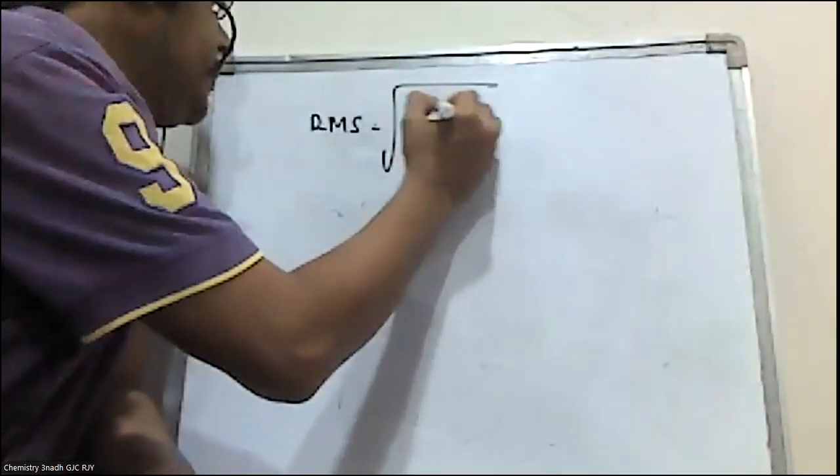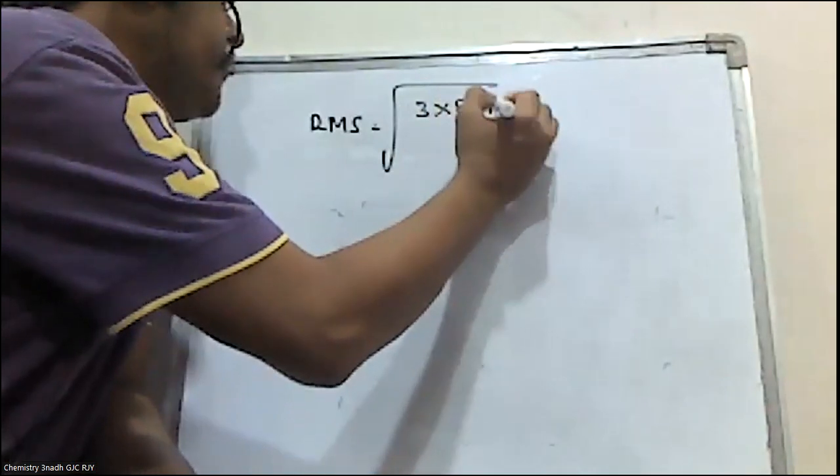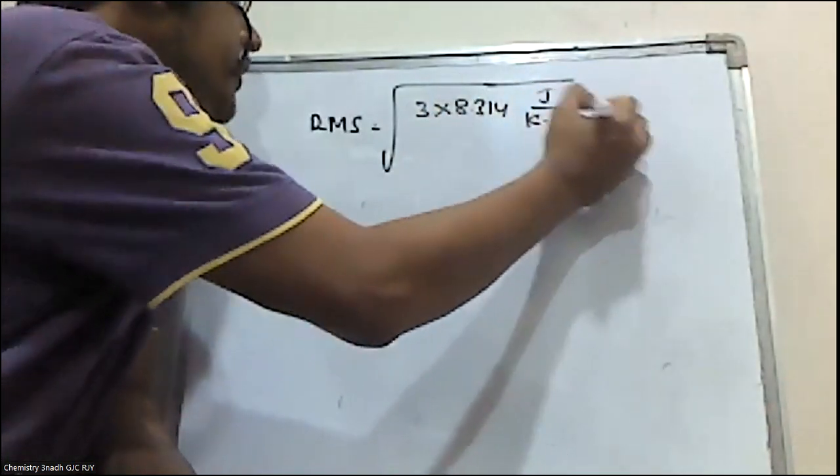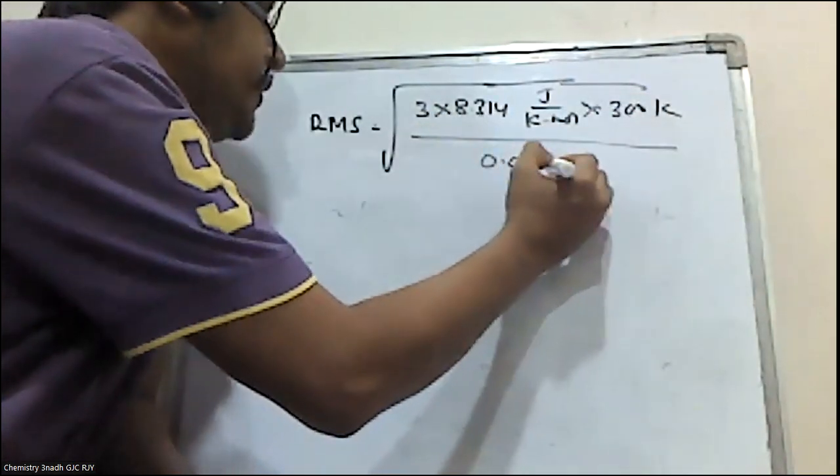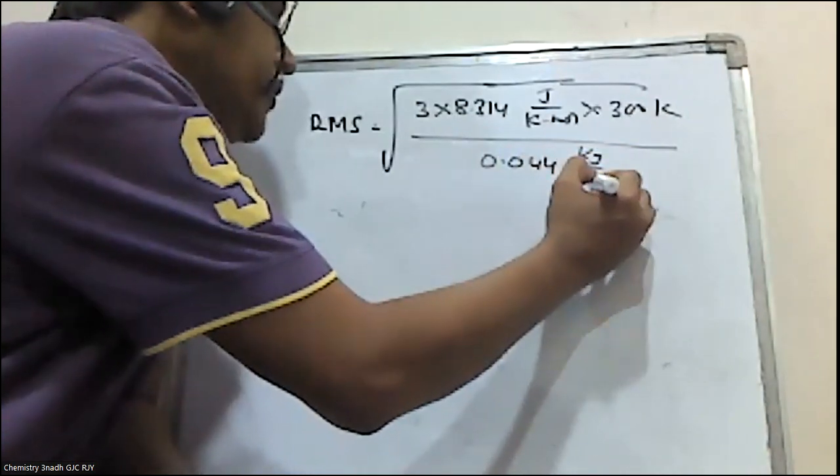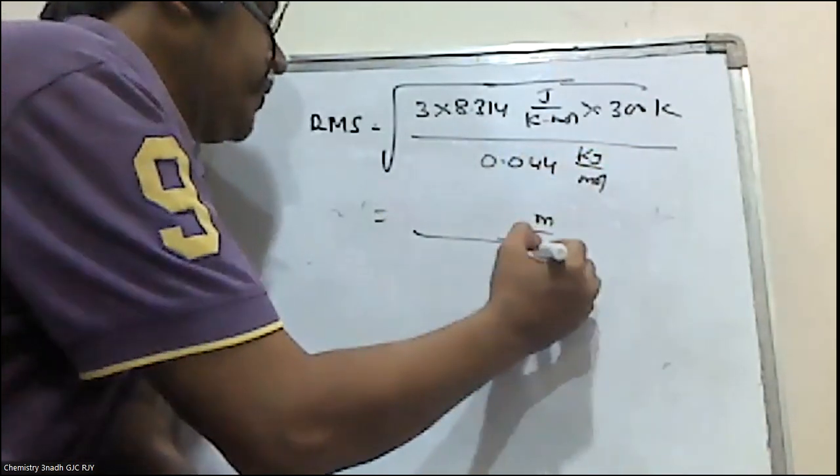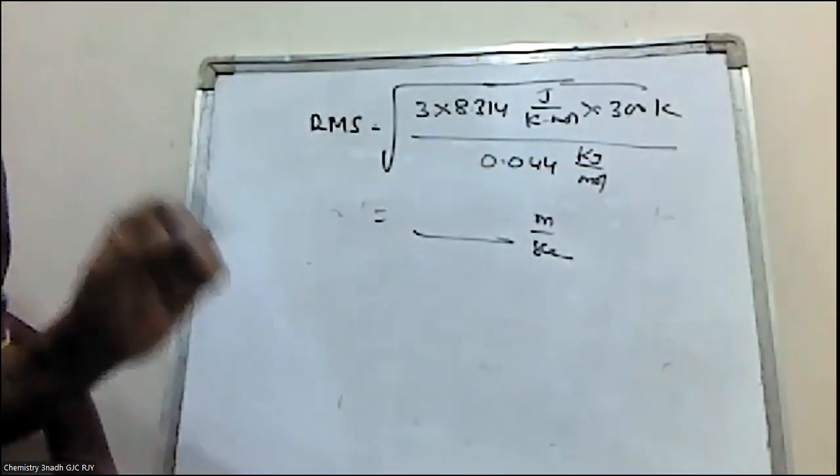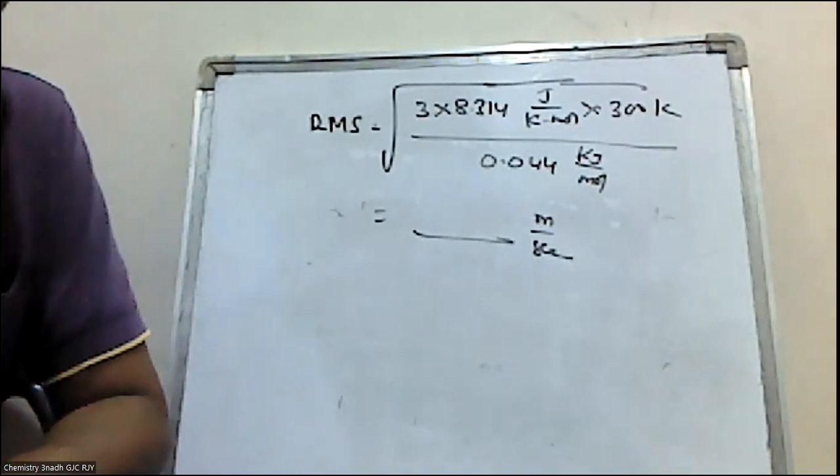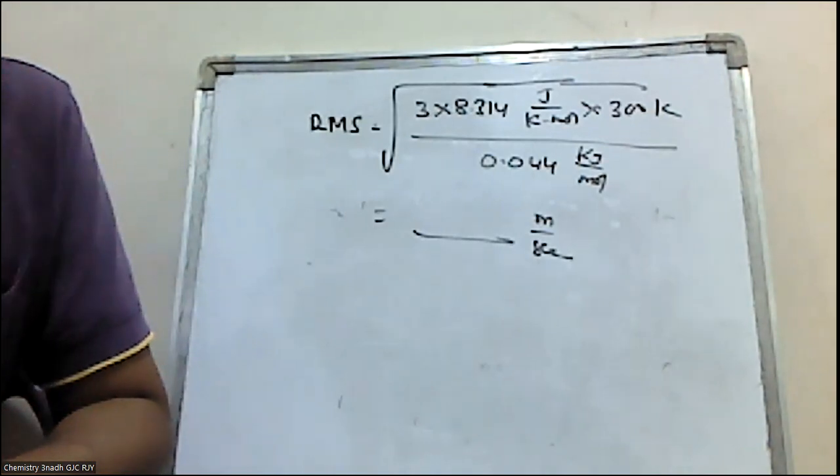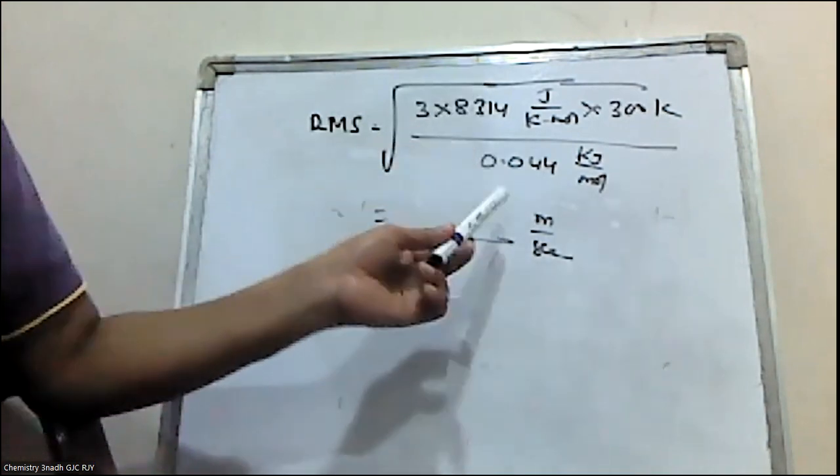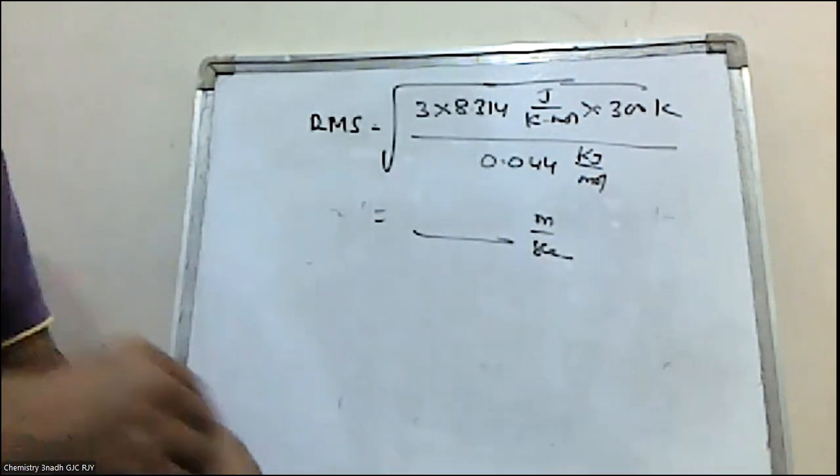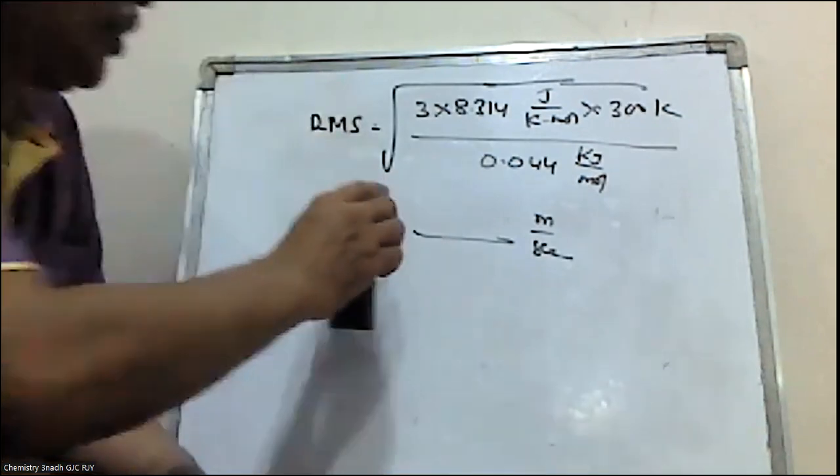RMS velocity equals 3 times 8.314 times 300 divided by 0.44. Simplify this to get the answer in meters per second. There are other formulas: average velocity is square root of 8RT by pi M, and most probable velocity is square root of 2RT by M.